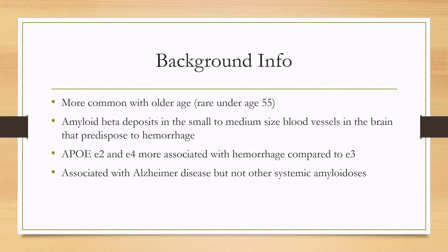It's characterized by amyloid beta deposits in the small to medium sized blood vessels in the brain, and these predispose to hemorrhage. There is a genetic component: APOE2 and E4 are more associated with hemorrhage compared to the more normal E3 genotype. This disease can be associated with Alzheimer disease, but not with other systemic amyloidosis.